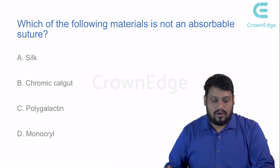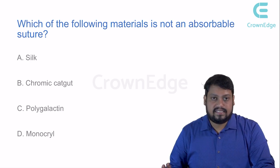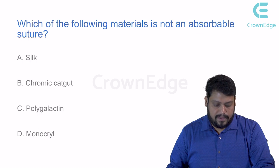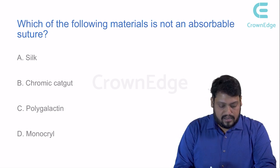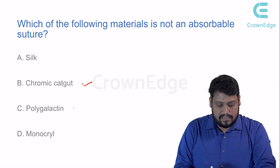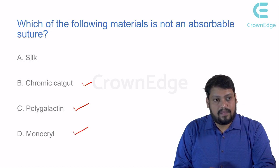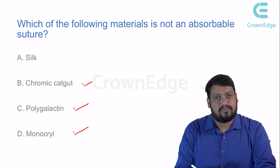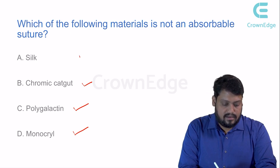Practice question: Which of the following is not an absorbable suture? Options: silk, chromic catgut, polygalactin, monocryl. Chromic catgut is absorbable, polygalactin (vicryl) is absorbable, monocryl is also absorbable. Silk may appear to be absorbable but it takes a very long time to degrade and is not naturally processed by the body, making it a non-absorbable suture. Silk is the correct answer.